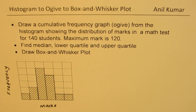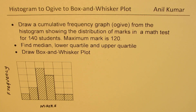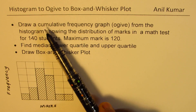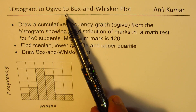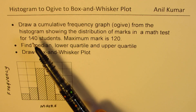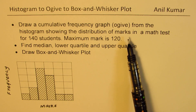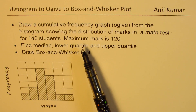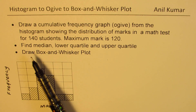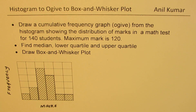I'm Adil Kumar, welcome to my series on statistics. We are discussing displaying data. In this particular video we will learn strategies to move from a histogram to an ogive, which is a cumulative frequency graph, and then we'll actually draw a box and whisker plot. The question is: draw a cumulative frequency graph from the histogram showing the distribution of marks in a math test for 140 students, maximum marks is 120. Find median, lower quartile, and upper quartile, then draw a box and whisker plot. This question is extremely important from a test point of view.